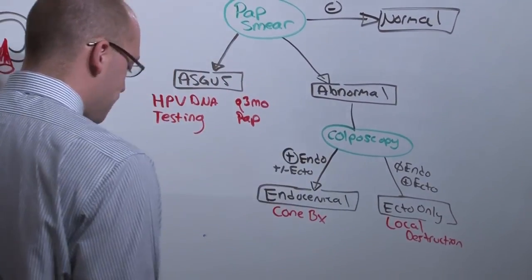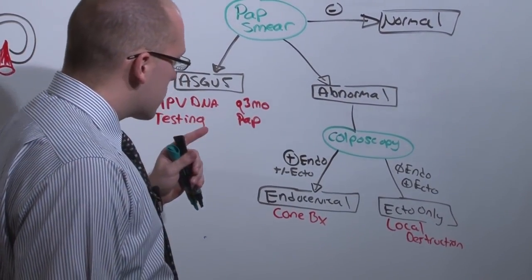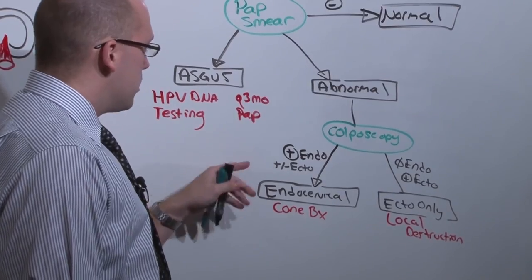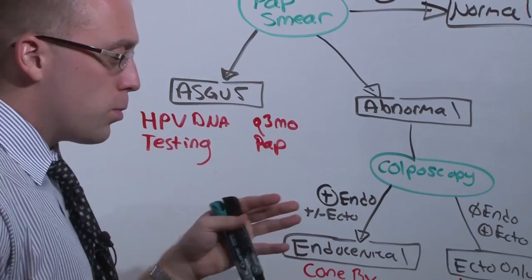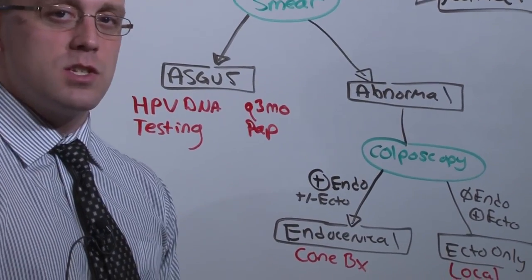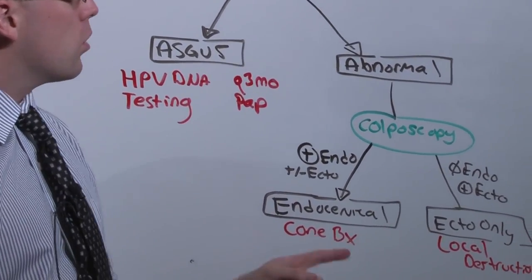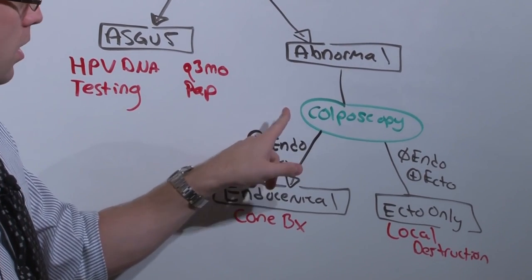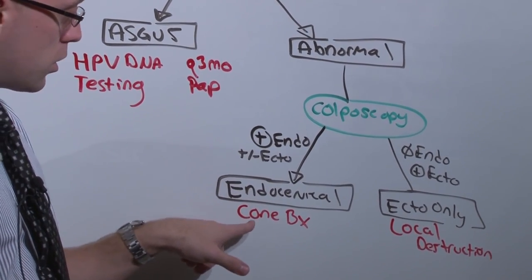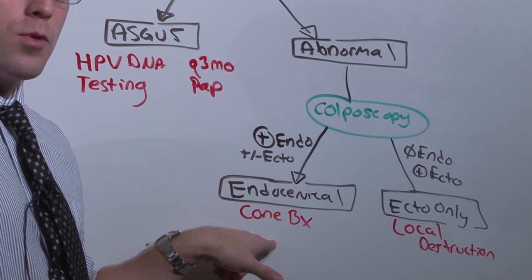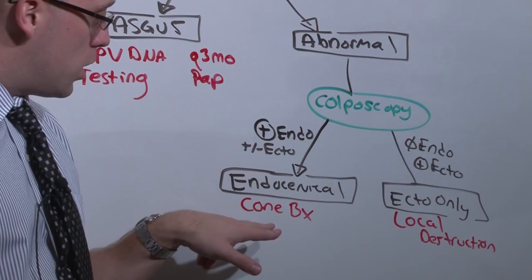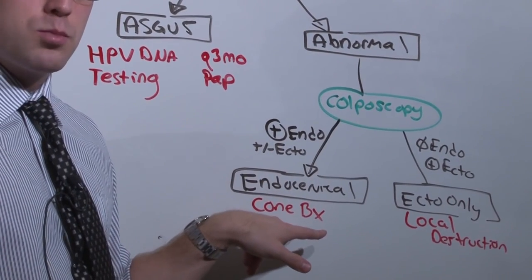It's important to mention that CIN1, that dysplasia, is treated the same as ASCUS. The whole purpose of the new recommendations is to decrease exposure of girls to unnecessary colposcopy, because endocervical biopsy with a cone biopsy can lead to incompetent cervix. You don't want to put mom through unnecessary stress or put baby at risk when she eventually gets pregnant.